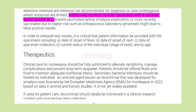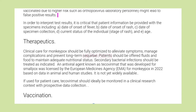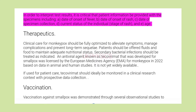Serology and antigen detection methods are therefore not recommended for diagnosis or case investigation where resources are limited. Additionally, recent or remote vaccination with a vaccinia-based vaccine — e.g., anyone vaccinated before smallpox eradication or more recently vaccinated due to higher risks such as orthopox virus laboratory personnel — might lead to false positive results. In order to interpret test results, it is critical that patient information be provided with the specimens including: date of onset of fever, date of onset of rash, date of specimen collection, current status of the individual, stage of rash, and age.